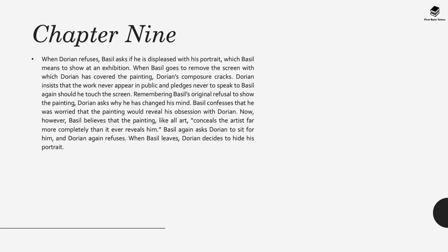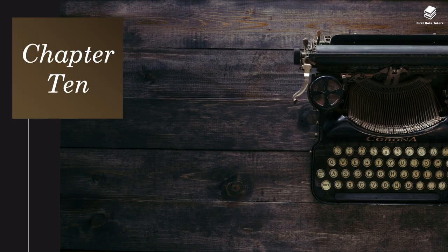When Basil wishes to see the portrait and goes to remove the screen with which Dorian has covered it, Dorian's composure cracks. He insists the work can never appear in public and pledges never to speak to Basil again should he touch the screen. Remembering Basil's original refusal to show the painting, Dorian asks why he's changed his mind. Basil confesses he was worried the painting would reveal his obsession with Dorian. Now, however, Basil believes that the painting, like all art, conceals the artist far more completely than it ever reveals him. Basil asks Dorian to sit for him, but Dorian refuses, and when Basil leaves, Dorian decides to hide his portrait.